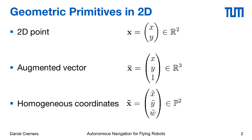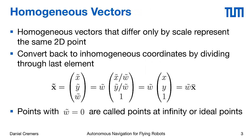Furthermore, we can introduce a representation for the same 2D point by what's called homogeneous coordinates, sometimes called projective coordinates. These are 3D vectors that have three independent components, but the key idea is that two homogeneous vectors that only differ by scale actually represent the same 2D point.